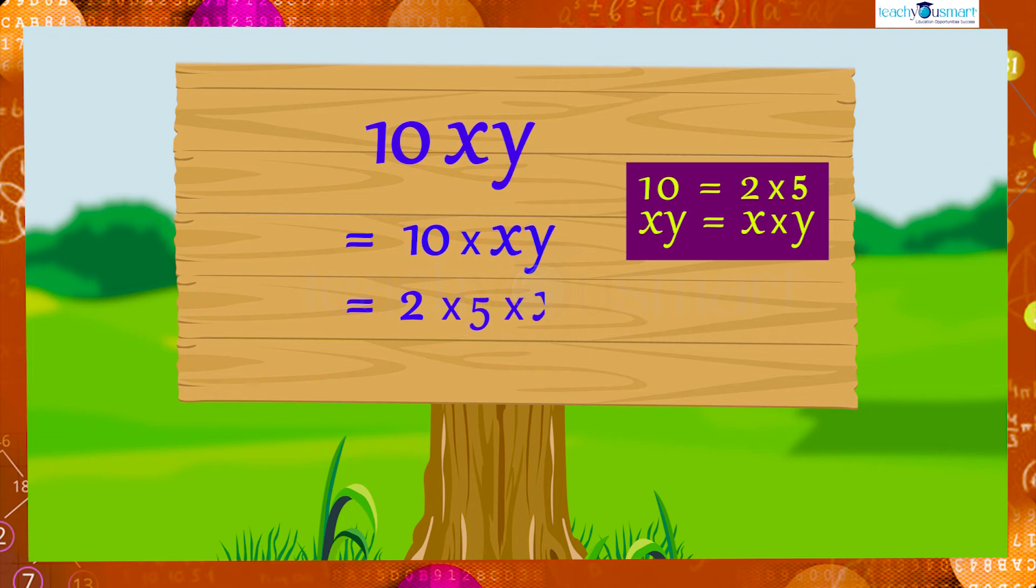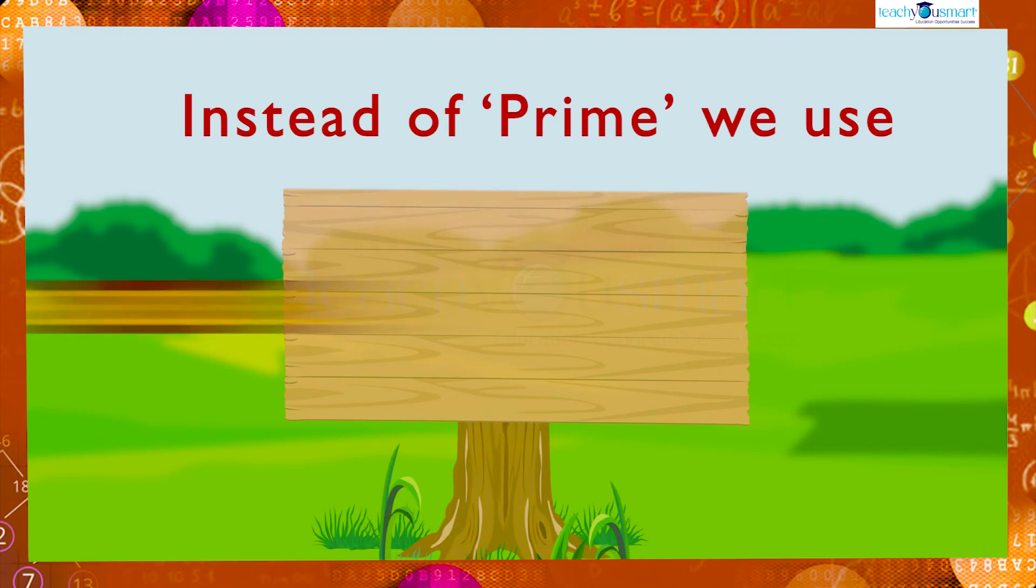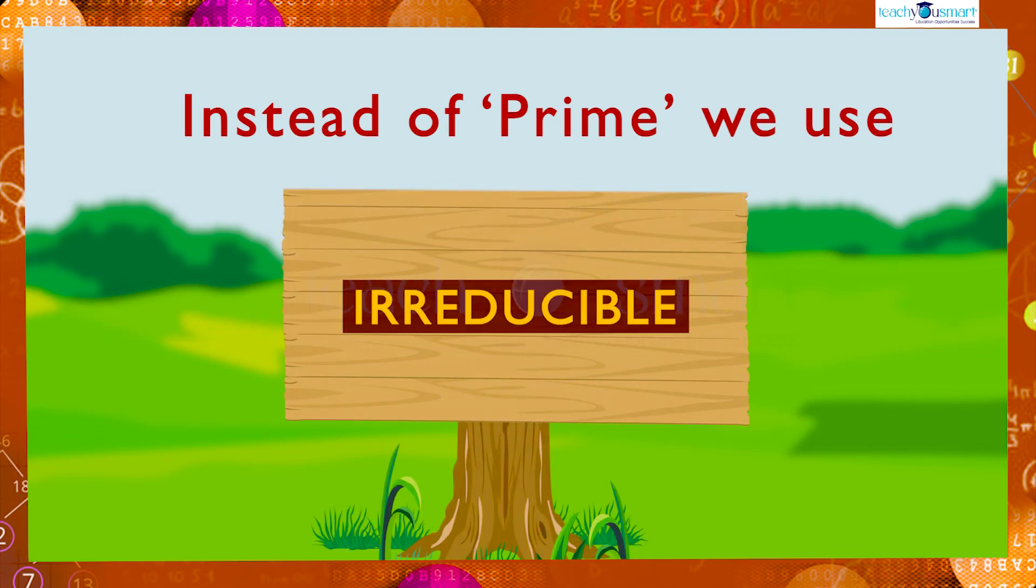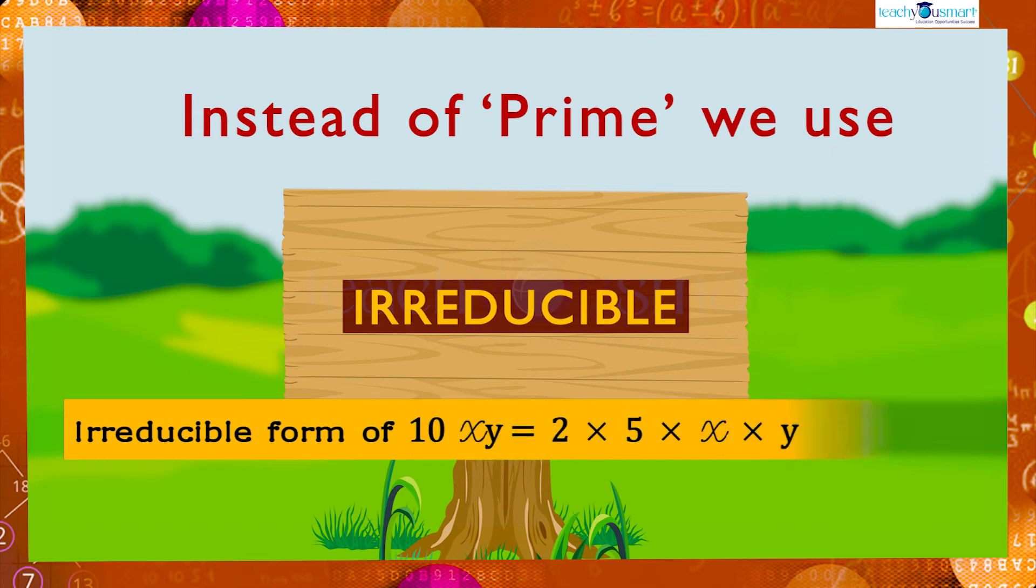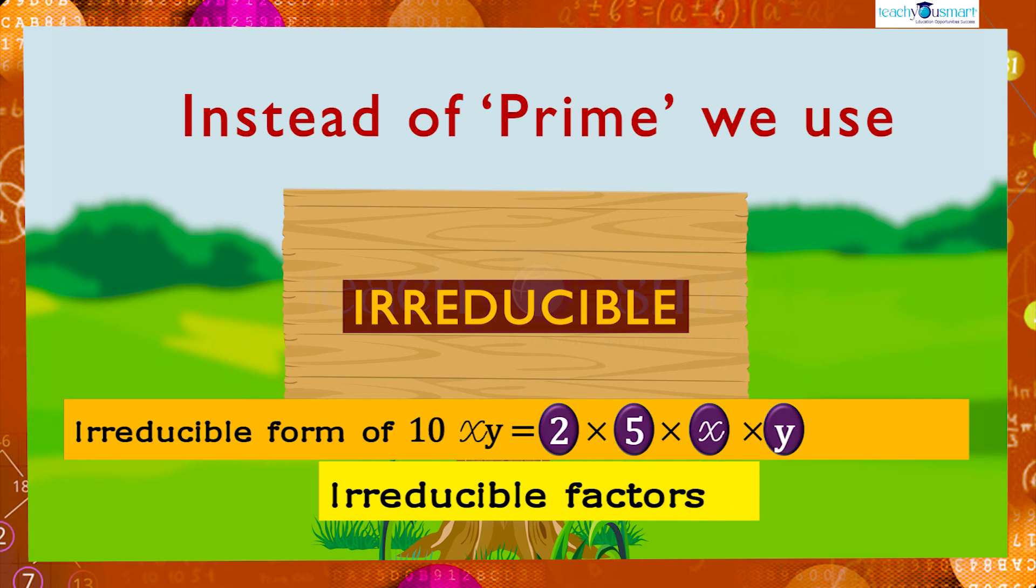Since this is an algebraic expression, we use the word irreducible instead of prime. So the irreducible form of 10xy is 2 multiplied by 5 multiplied by x multiplied by y, and 2, 5, x, and y are the irreducible factors of 10xy.